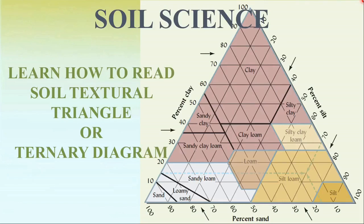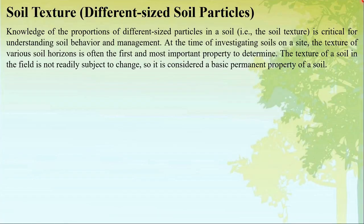In this video we will learn how to read a soil textural triangle or ternary diagram. To read the diagram we need the percentage of different sized soil particles — that is sand, silt, and clay. In simple terms, the proportion of different sized soil particles is called soil texture, and it is the basic permanent property of a soil as it is not readily subject to change.